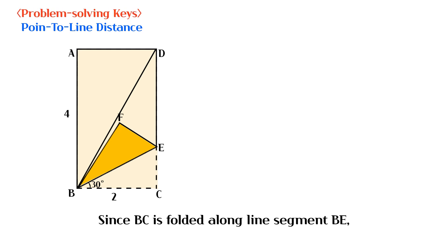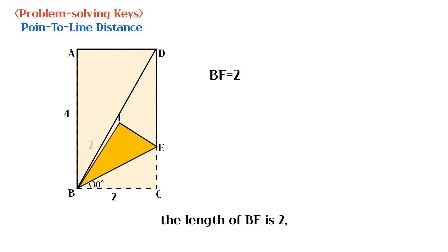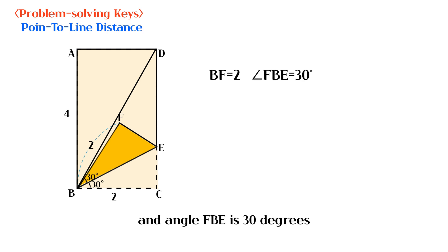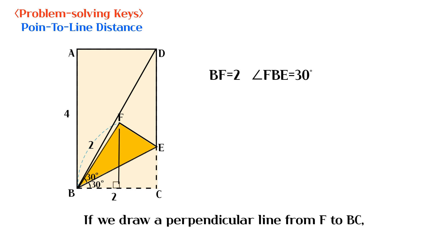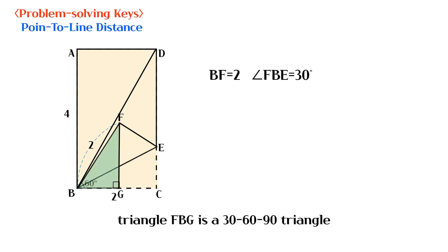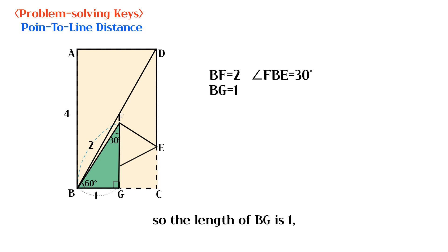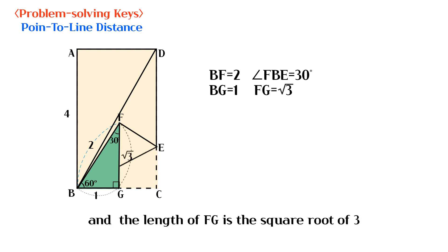Since BC is folded along line segment BE, the length of BF is 2 and angle FBE is 30 degrees. If we draw a perpendicular line from F to BC, triangle FBG is a 30-60-90 triangle. So the length of BG is 1 and the length of FG is the square root of 3.